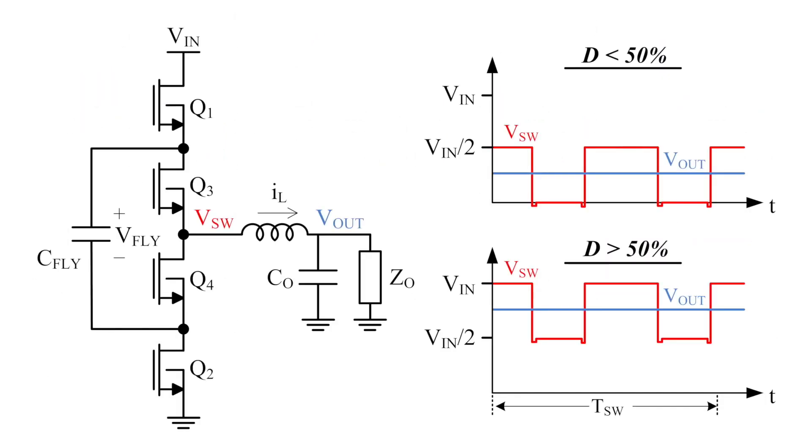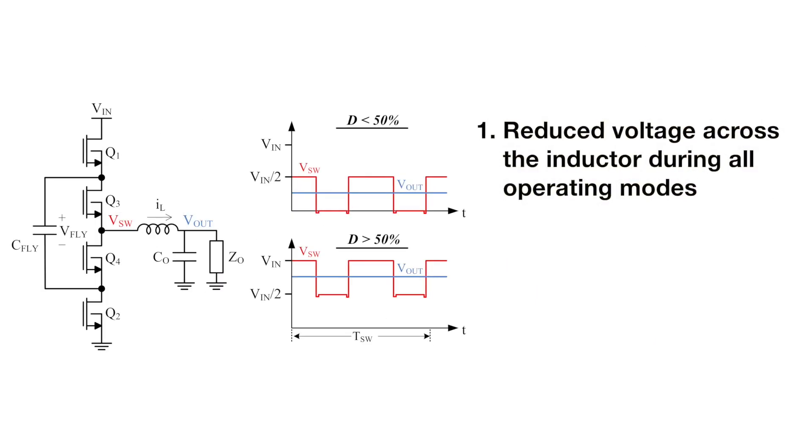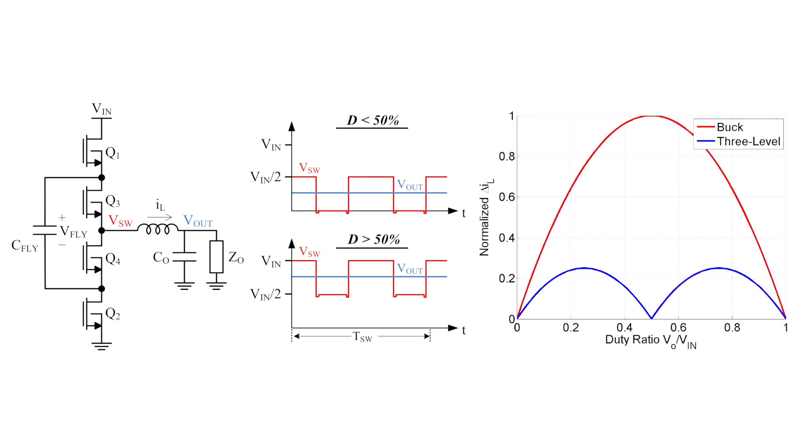Two clear benefits can be derived from the three-level converter waveforms discussed. First, reduced voltage stress across the inductor and the switches during all operating modes. And second, switching frequency doubling at the switch node. These two combine to reduce the maximum inductor current ripple by 4x when compared to a buck converter.